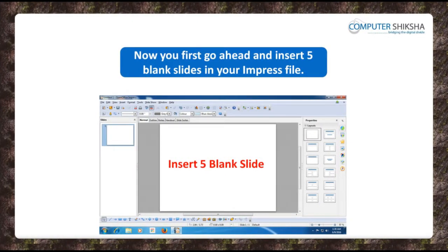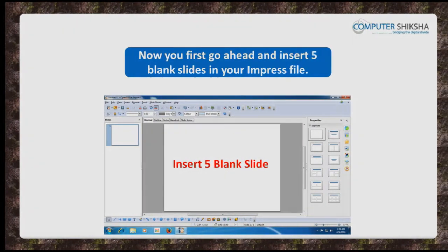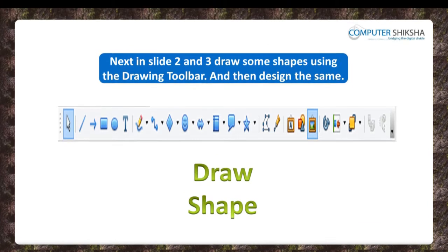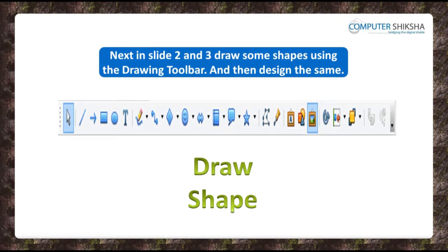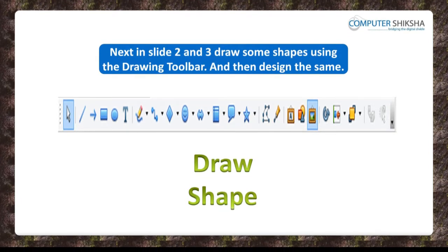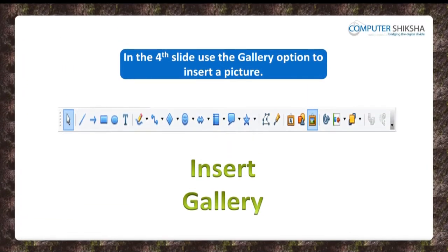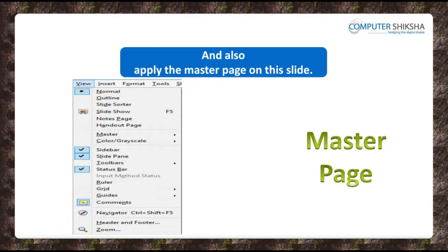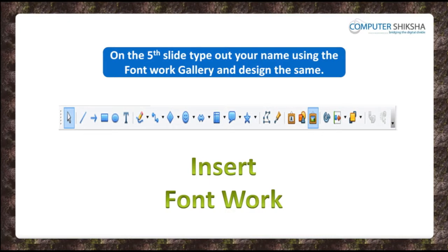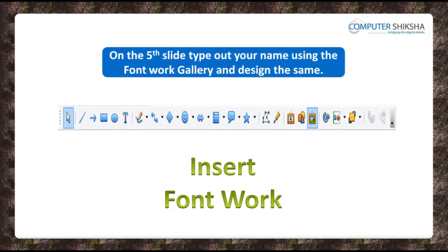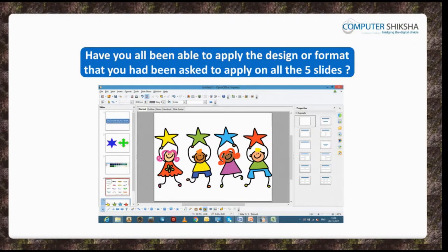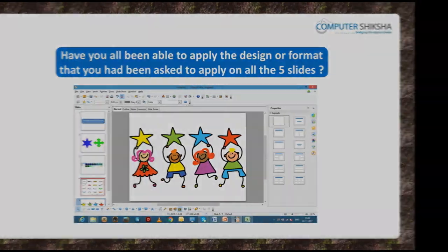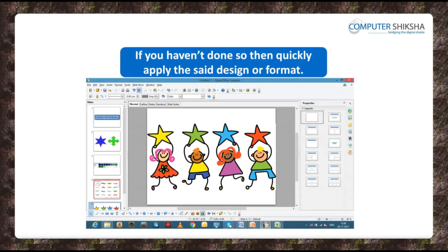First, go ahead and insert five blank slides in your Impress file. Type something in the first slide — you can type about yourself. In Slide 2 and 3, draw some shapes using the Drawing Toolbar and design them. In the fourth slide, use the Gallery option to insert a picture and also apply the Master Page on this slide. On the fifth slide, type out your name using the Font Work Gallery and design it. If you haven't done so, quickly apply the said design or format.